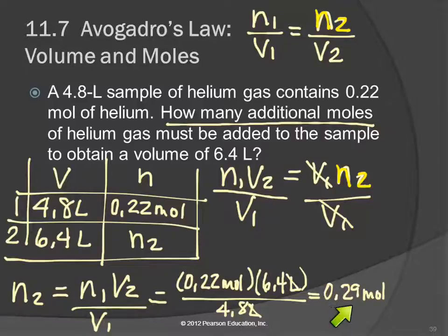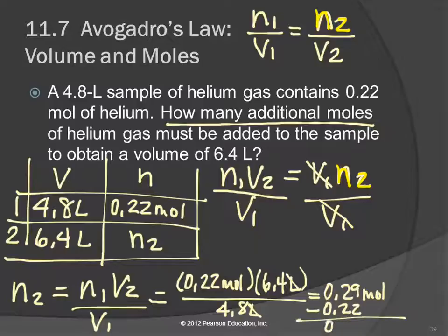What we solved for was the total moles you need to have at the end. To find what you have to add, you subtract what you started with, and you find that you need to add 0.07 moles. Watch out for things like that, because in the homework they love to do stuff like that. Another trick they like to play is giving you one volume in liters and one in milliliters.